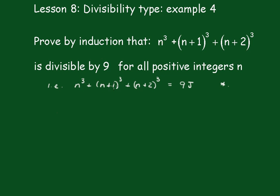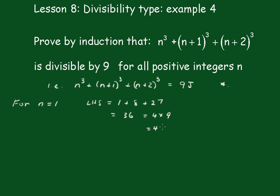That is, n cubed plus n plus 1 cubed plus n plus 2 cubed equals 9j, where j is an integer. Starting off with n equals 1: the left hand side equals 1 cubed, which is 1, plus 2 cubed, which is 8, plus 3 cubed, which is 27, and that comes to 36, which equals 4 times 9, which equals 9j, j being equal to 4.